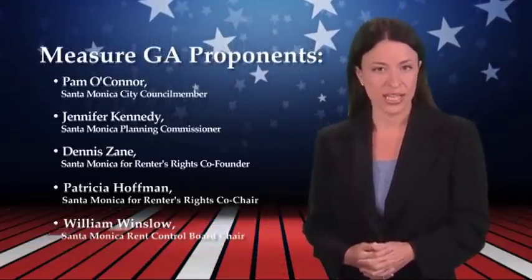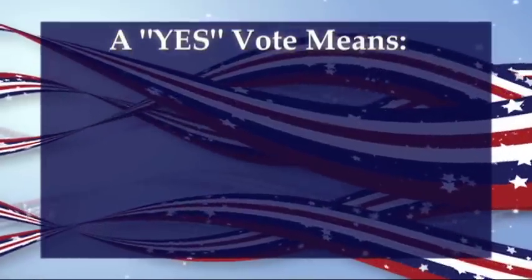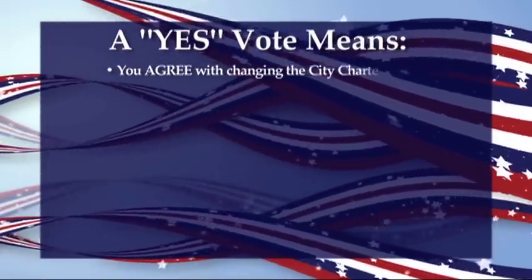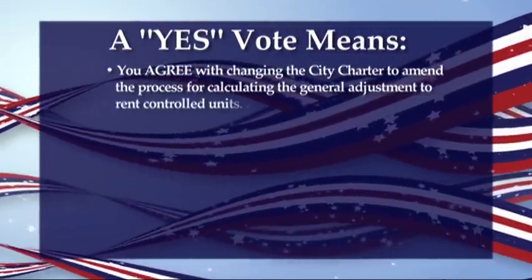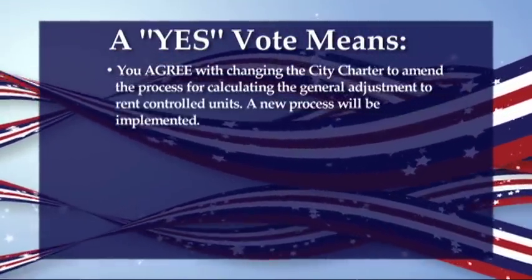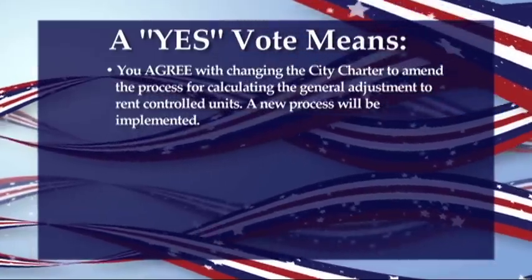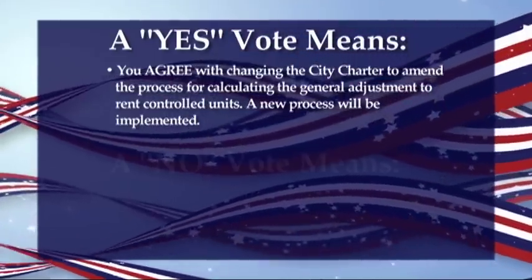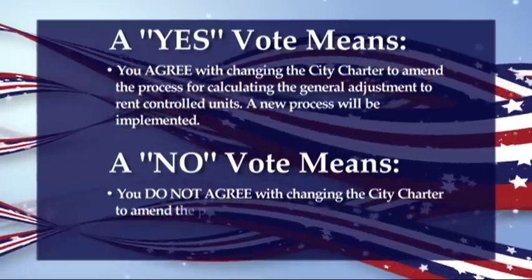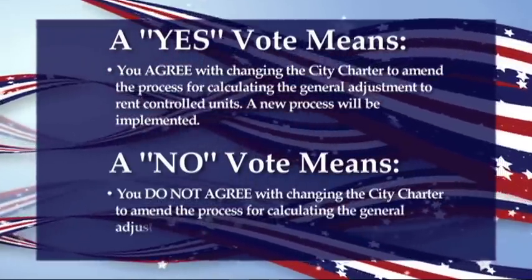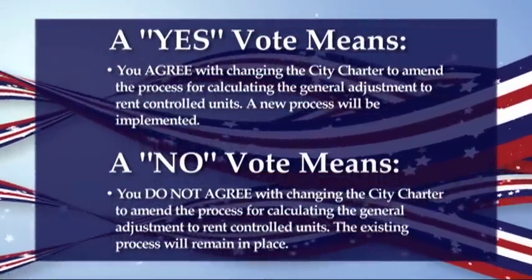There are no arguments against the measure. Voting yes would mean you agree with changing the city charter to amend the way the general adjustment to rent control units is calculated. Voting no would mean you don't want to change the city charter to amend the way the general adjustment is calculated.